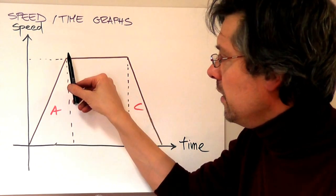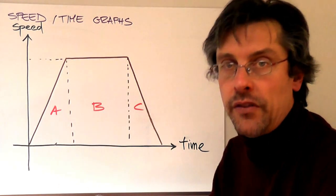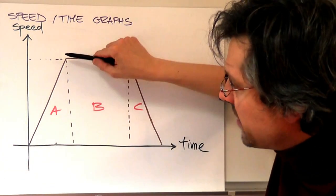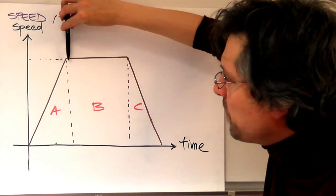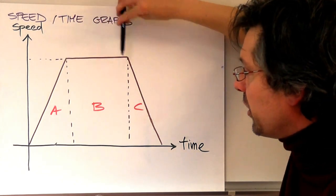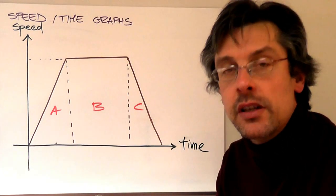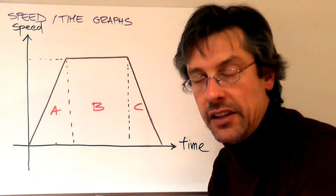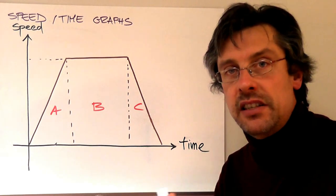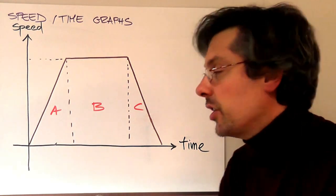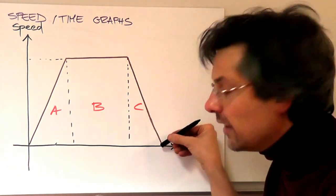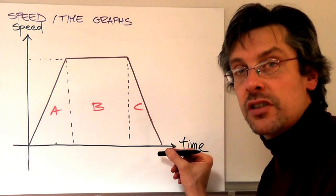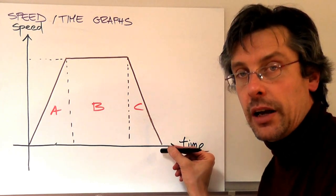In part b we have a flat line, which represents a constant speed. So the object accelerates, reaches a top speed, and keeps this top speed until a certain point. Then what happens? The speed goes down — again at a constant rate. So this is a constant deceleration, or retardation, until it reaches a halt at zero speed over this amount of time.